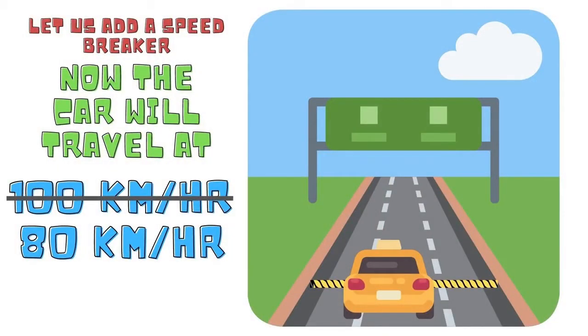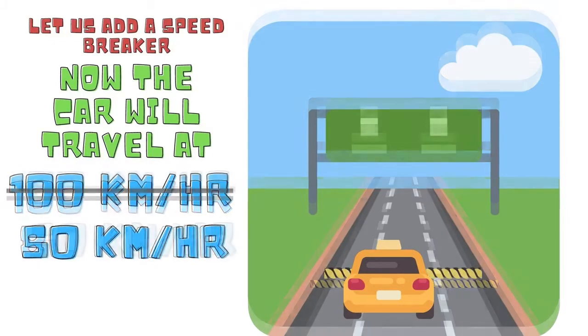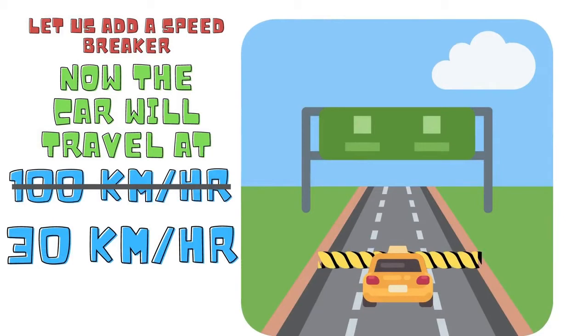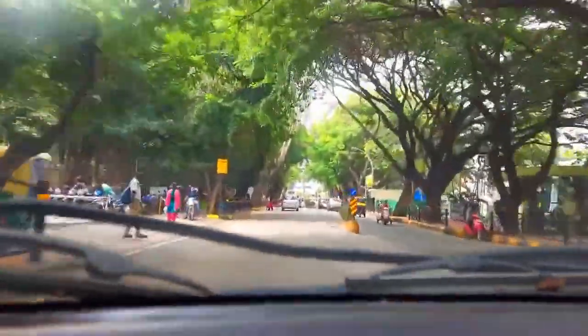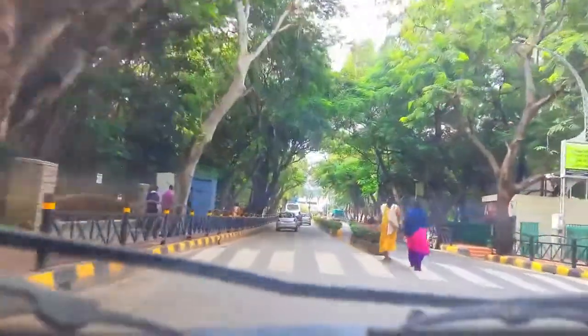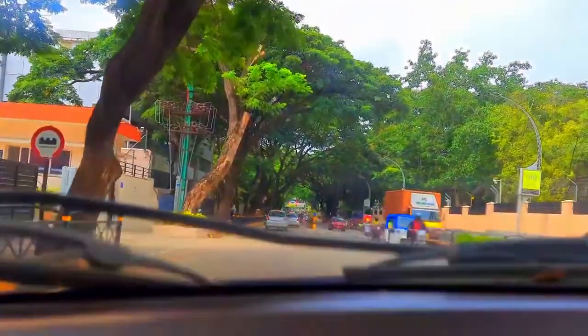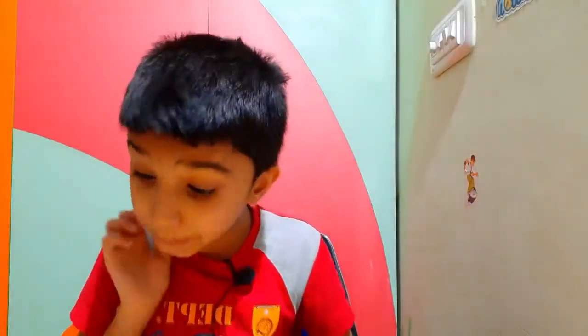Let me show you with an example. If I put one speed breaker here, the car going at 100 kilometers per hour will go at 80. If I put a bigger speed breaker, it will go at 50 kilometers per hour. And if I put an even bigger speed breaker, it will go at maybe 30 or 20. So the same thing applies in a circuit — when we put a larger resistor, the flow of electricity reduces, just like a larger speed breaker reduces the speed of a car.